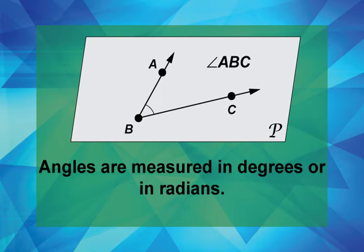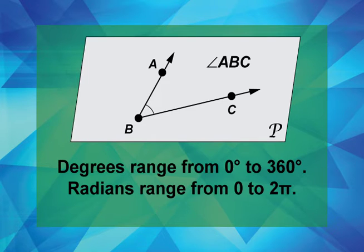Angles are measured in degrees or in radians. Degrees range from 0 degrees to 360 degrees. Radians range from 0 to 2 pi.